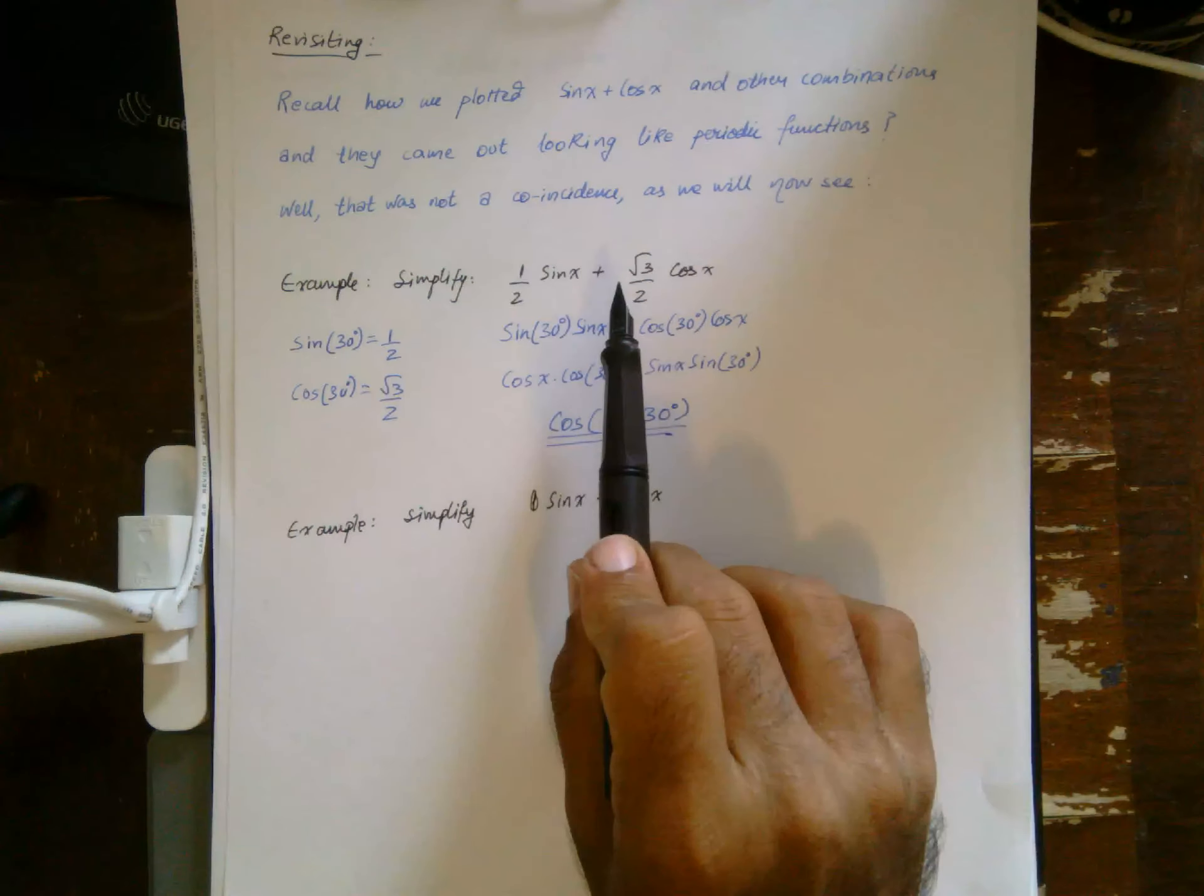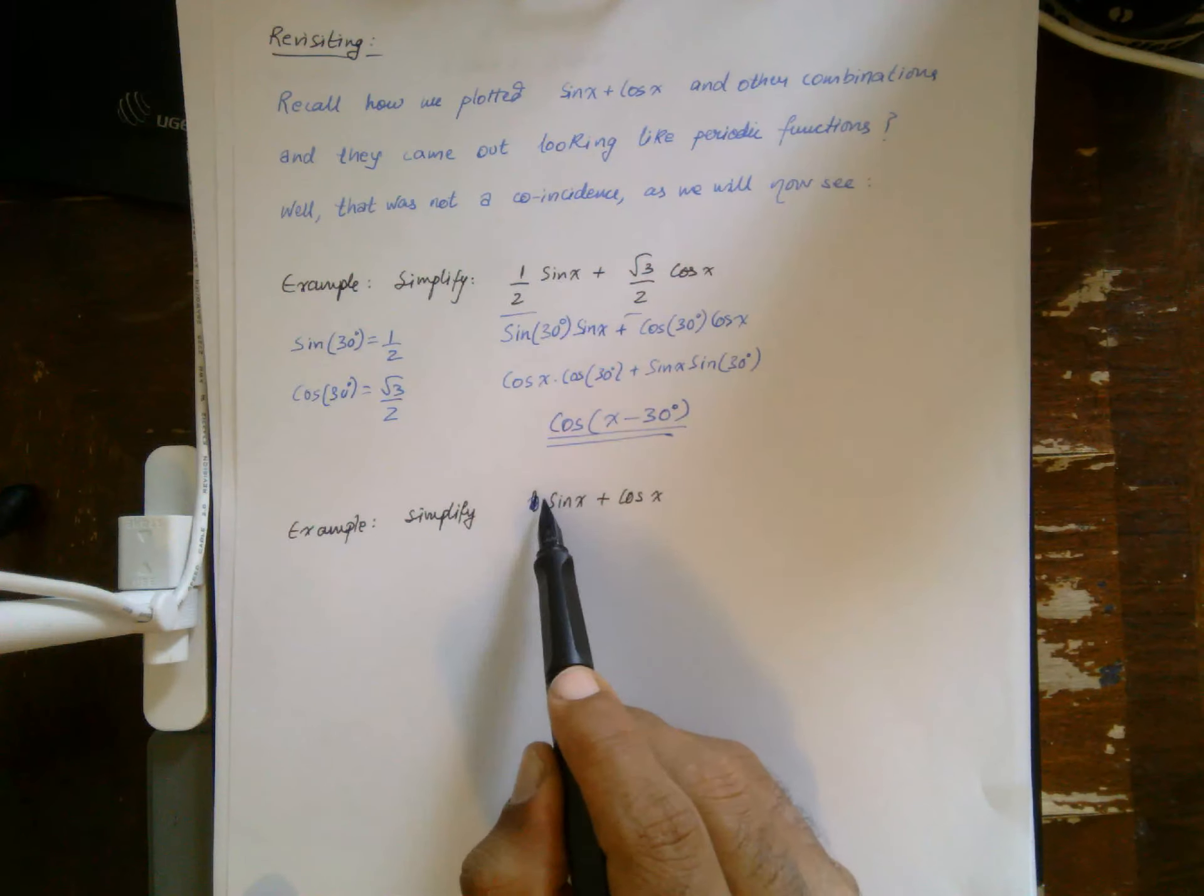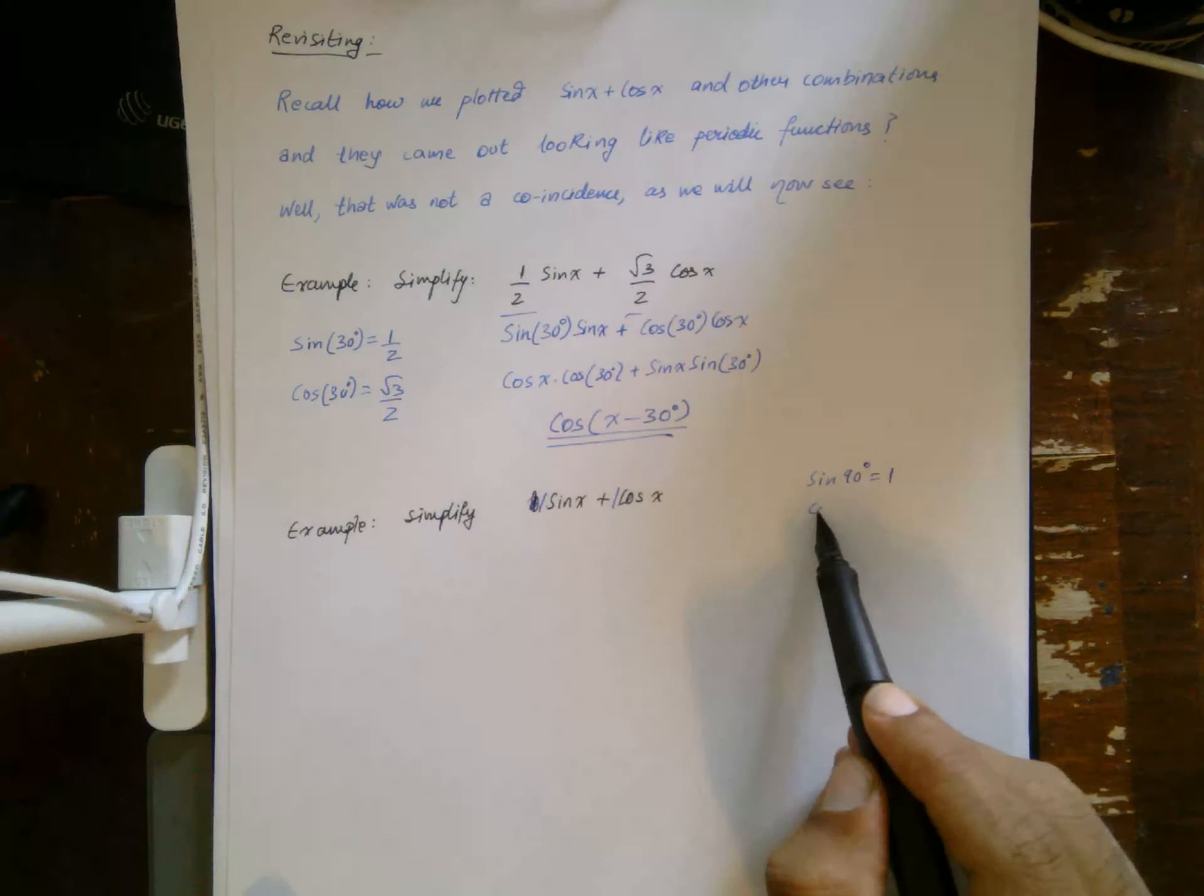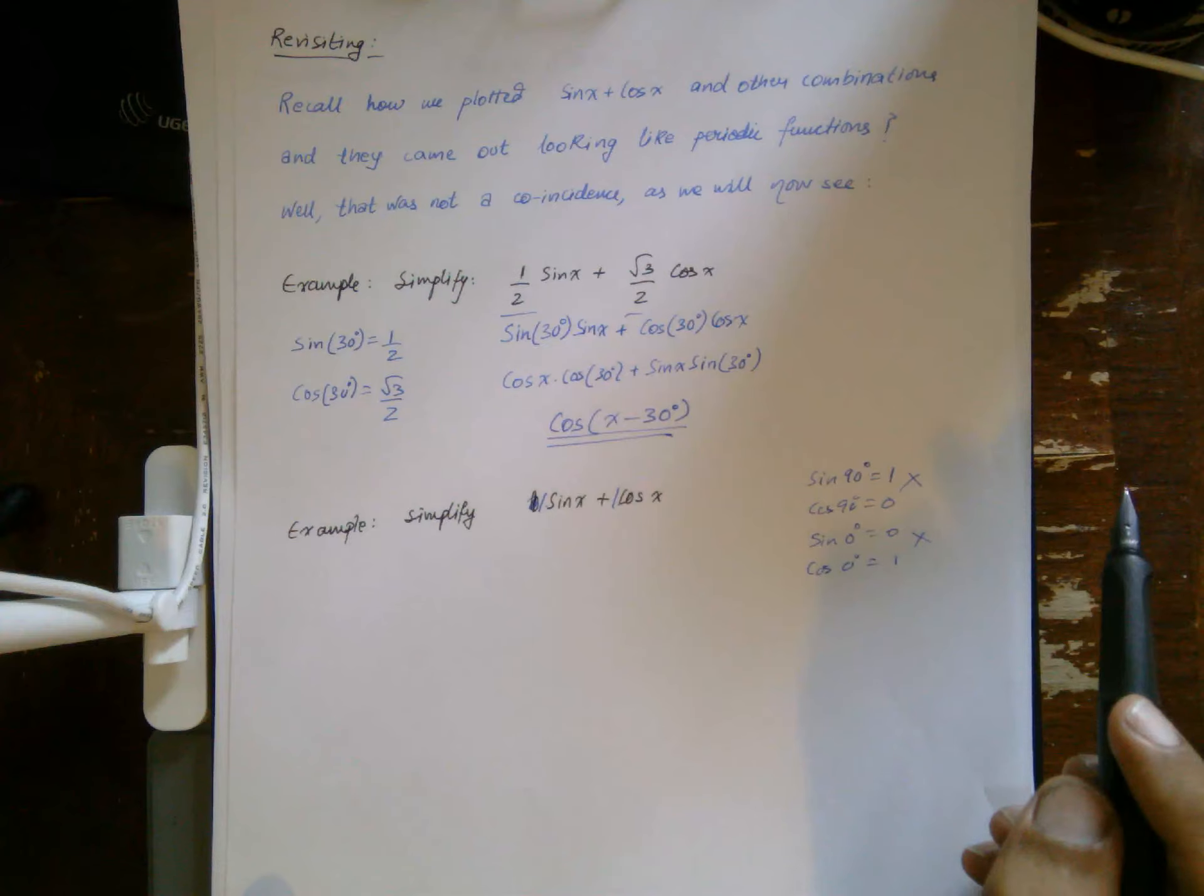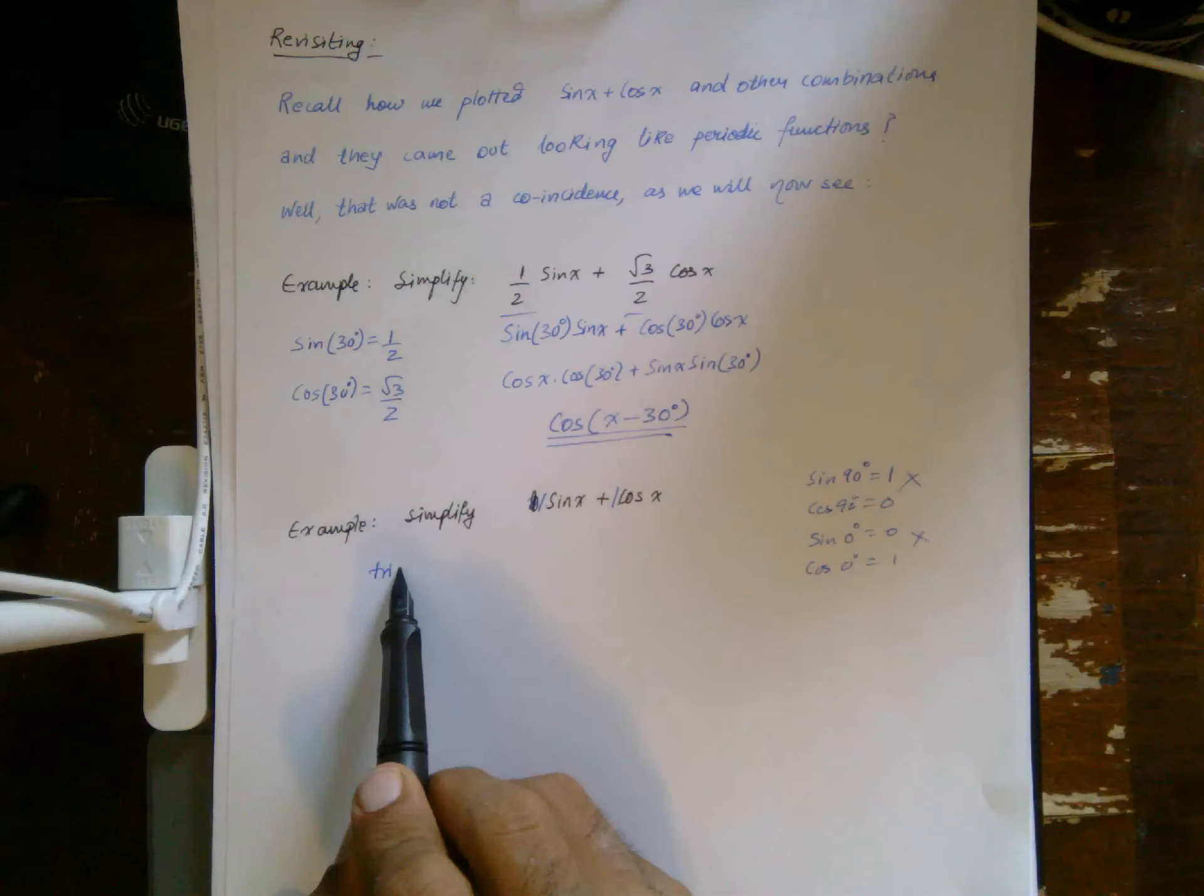So that's case one where you can directly look at these and you have the values. But what about something like sine x plus cosine x? Now the numbers in front of these are one, but while sine 90 is one, cosine 90 is zero, so that doesn't work. Again, sine zero is zero and cosine zero is one, so that doesn't work.